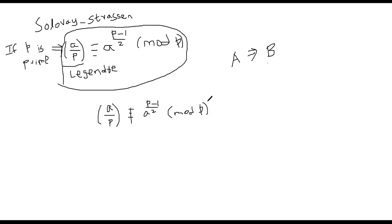So we try to find some A such that the Jacobi symbol is not equal to A^((P−1)/2). If we compute the Jacobi symbol and it differs from A^((P−1)/2) mod P, we can immediately conclude that P cannot be prime because the property is violated. We try multiple A's, and if any one of them violates this, P is composite.